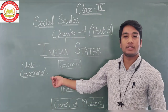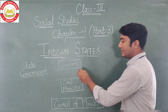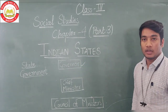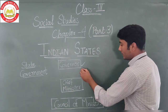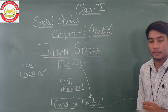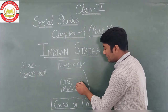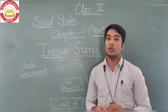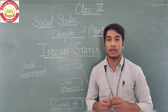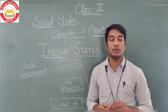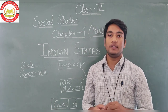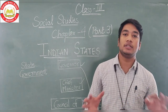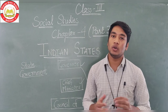Now the structure of State Government: the head of state is Governor. For helping him, there are council of ministers, and the head of these council of ministers is the Chief Minister. I hope you all got the point of Central Government and State Government. One more important information: Lakshadweep, which is our union territory, is the smallest union territory, and Ladakh is the biggest union territory of all India. Thank you.